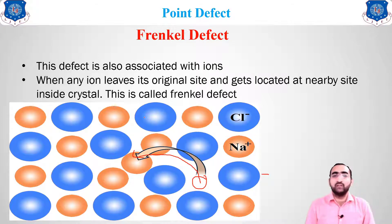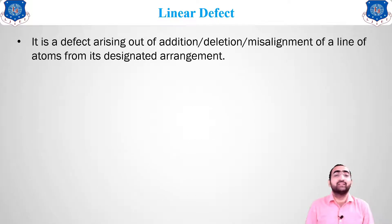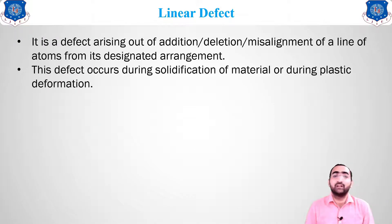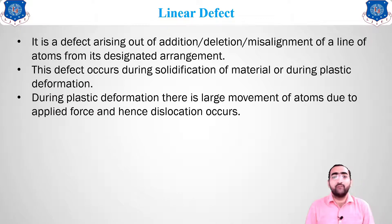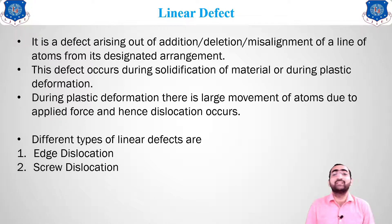This was about the first defect — point defect. Now moving forward to the linear or line defect. Line defects arise due to the addition or deletion of a particular whole line of atoms in a crystal. It also occurs due to solidification and plastic deformation of the material. During plastic deformation there is a large movement of atoms due to applied force, creating chances for atoms to displace. There are two types: edge dislocation and screw dislocation.